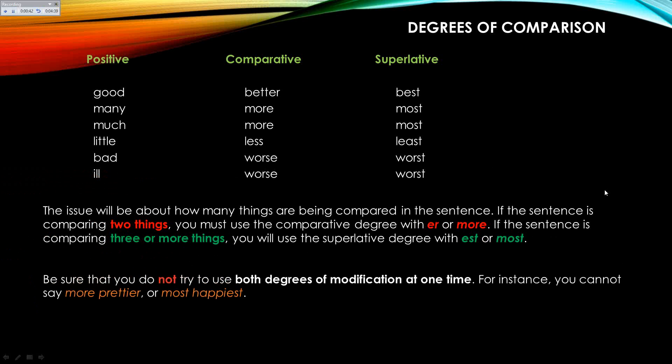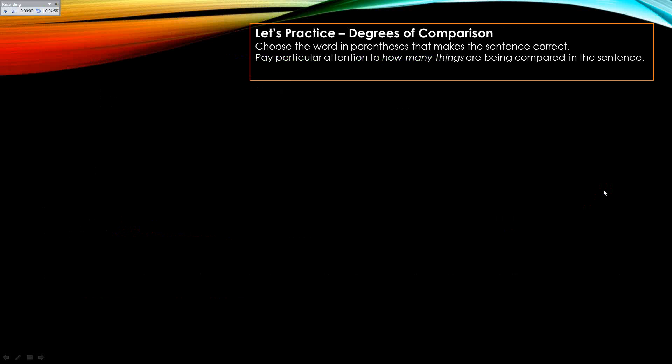What I want you to know is that this is just a counting game. When you see comparisons, you just ask: how many are we talking about? If we're talking about two, you're going to add either ER or more. And if you're talking about three or more, you're going to add EST or most.